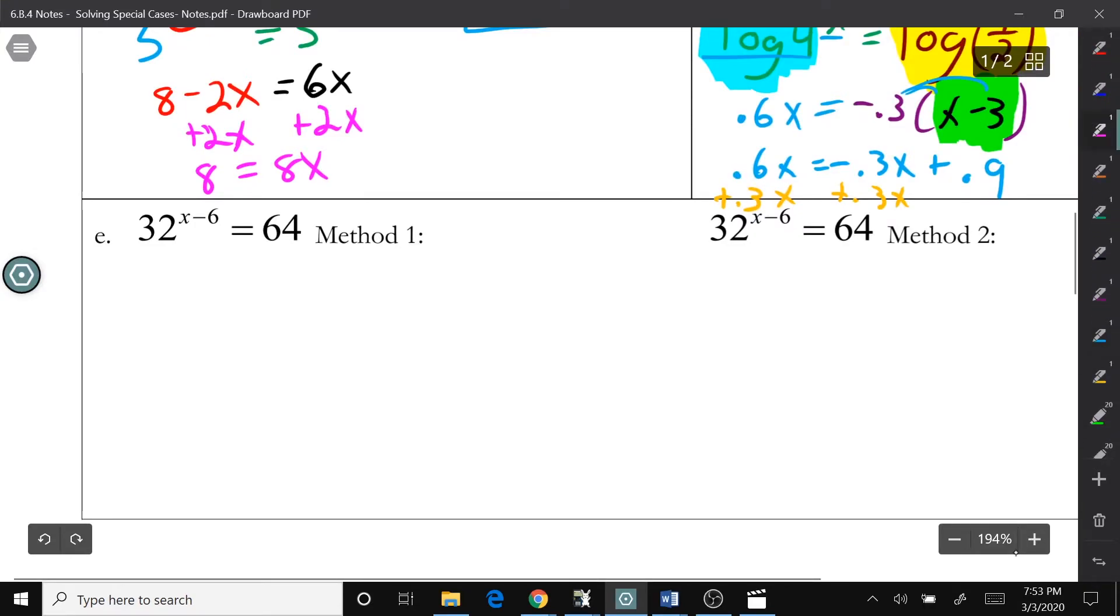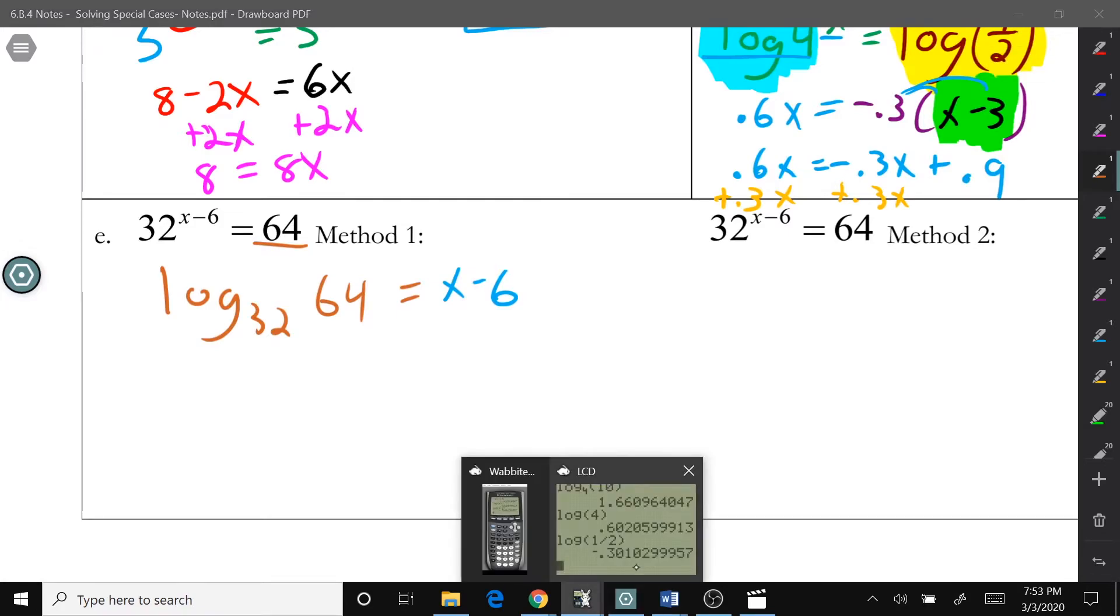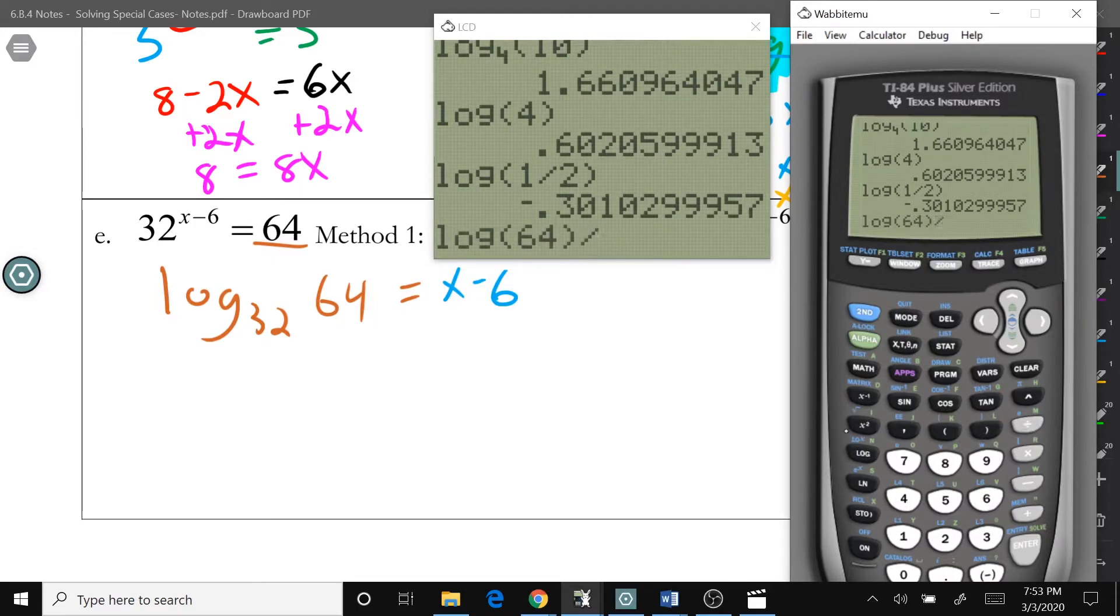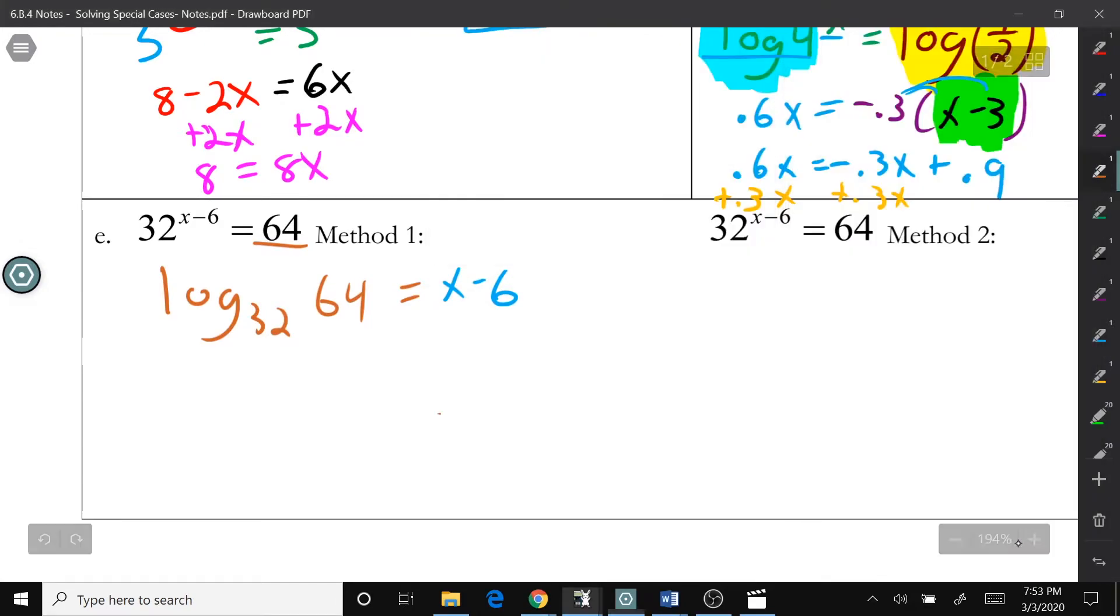Actually, for letter E, because we don't have an exponent on each side, we can just convert this to a log. I think that would be easier. So, log, our base is 32. Our exponent is x minus 6. Well, 64 goes here. So, we can type in the left side into the calculator using that change of base formula. So, log 64, make sure you close the parentheses, divided by log 32. That gives us 1.2 equals x minus 6. Then, add 6 to both sides. We get 7.2 equals x.